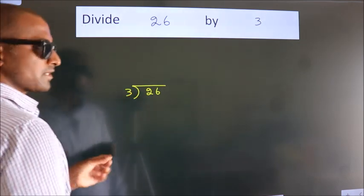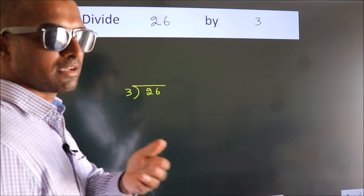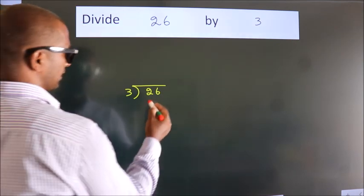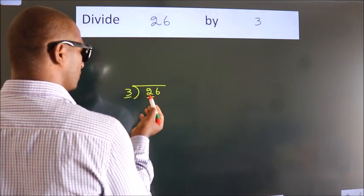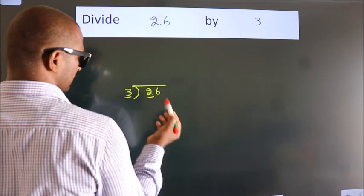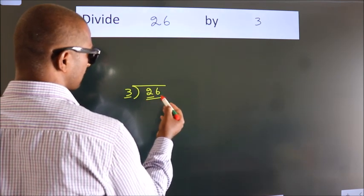This is your step 1. Next, here we have 2, here 3. 2 is smaller than 3, so we should take 2 numbers: 26.